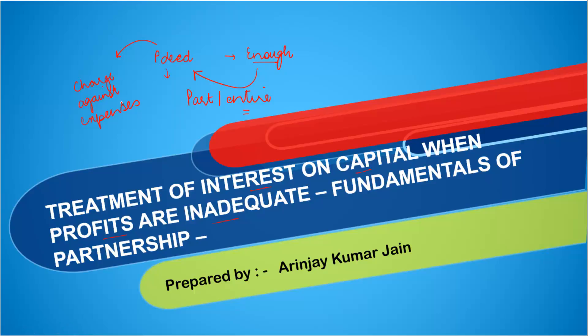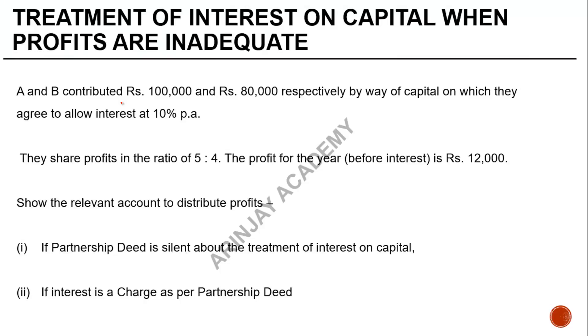In these two cases, how you are going to do accounting is what we will cover in this video, provided by Arinjay Academy. Let's look at this problem: A and B contributed ₹1 lakh and ₹80,000 respectively by way of capital, on which they agree to allow interest at the rate of 10% per annum. They share profits and losses in the ratio of 5:4.